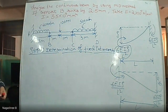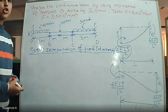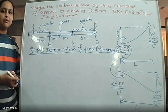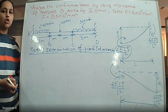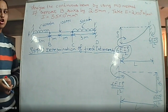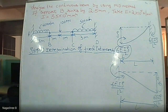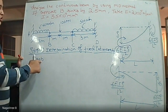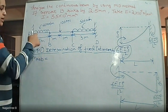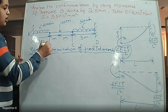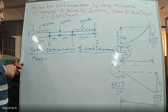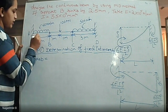Total fixed end moments are the summation of FEM due to loading and FEM due to sinking of supports. For span AB, considering support B is sinking, the right side of span AB is lower than the left side — this satisfies the second condition, so the FEM due to sinking is anticlockwise, i.e., negative.